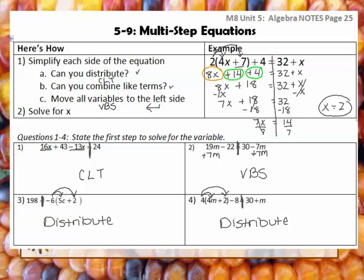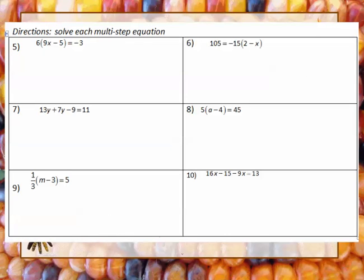Let's look down below at this notes page. These problems are just your basic — either you're doing combining like terms or you're doing the distributive property; they're not mixed up in this one. Go ahead and try numbers 5, 6, 7, 8, 9, and 10. All you're asking yourself is: do I have the distributive property, do I have combining like terms, do I need to get my letters to the left? Then solve. We'll talk about a few of them after.